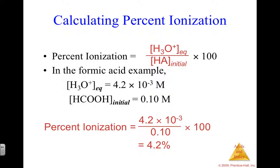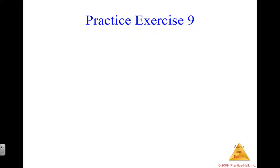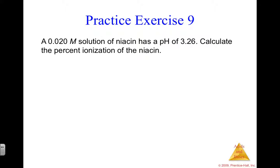If you're asked to solve for a percent ionization, depending on what you're given, you may or may not need to use an ICE box. Practice exercise 9: you're given a 0.020 molar solution of niacin with a pH of 3.26. I know niacin is an acid because the pH is less than seven, meaning the solution is acidic. Calculate the percent ionization of niacin. Take a few minutes, hit pause, solve it on your own, then hit play.